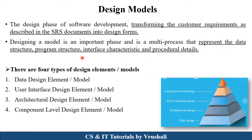As we discussed earlier, there are four types of design model in software engineering. This design model represents data structure, program structure, interface characteristics and different procedural details in the form of design. In the previous session, we discussed about data design model and user interface design model with examples. In today's session, we will discuss about architectural design model.